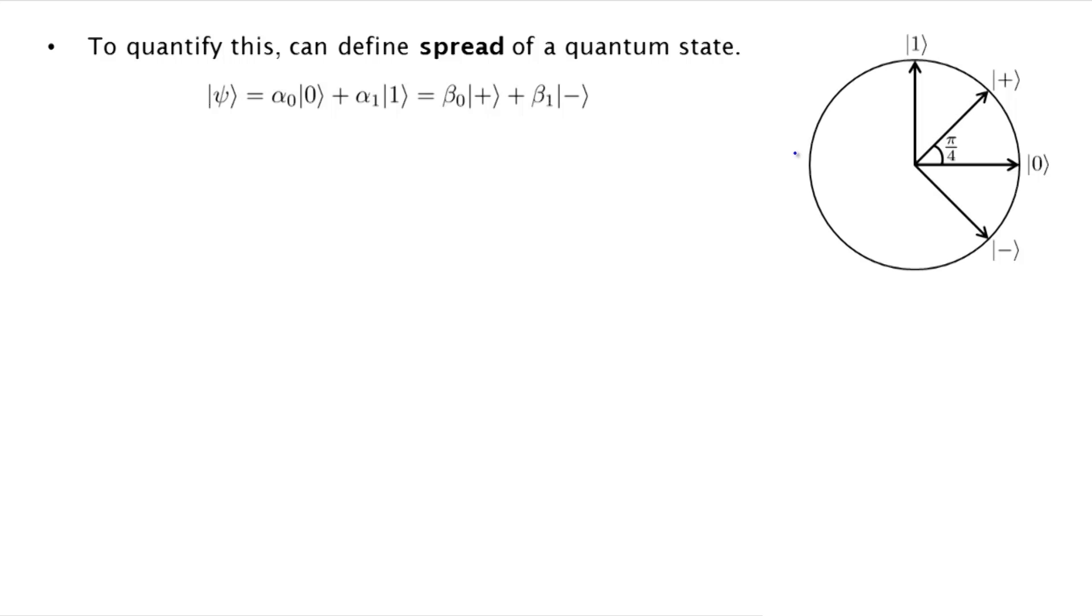What we can do is we can define a measure of how uncertain, how inaccurately we know the bit value and how inaccurately we know the sign value. So let's write out the state psi in terms of alpha 0, 0 plus alpha 1, 1, and we can also write it in the plus minus basis with amplitudes beta 0 and beta 1. And now we are going to define the spread in this standard basis, the 0, 1 basis, as the absolute value of alpha 0 plus the absolute value of alpha 1, and in the sign basis it's absolute value of beta 0 plus absolute value of beta 1.